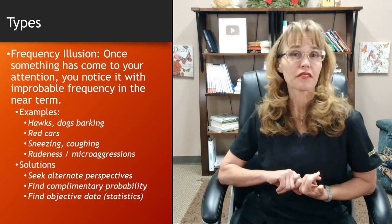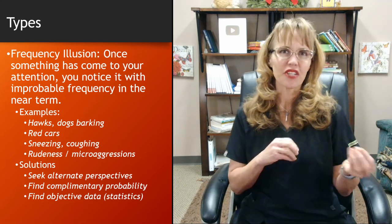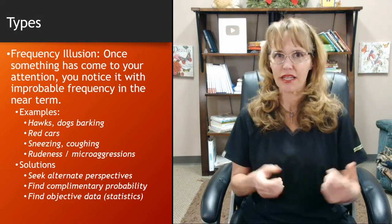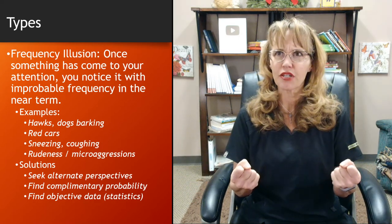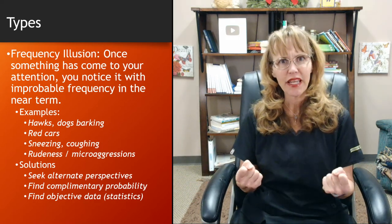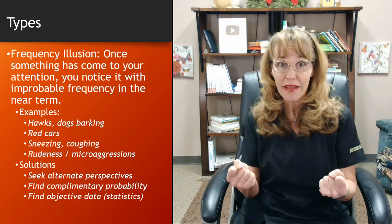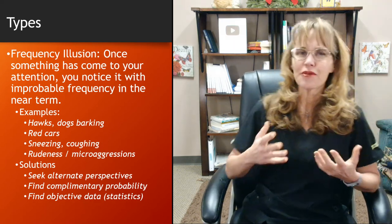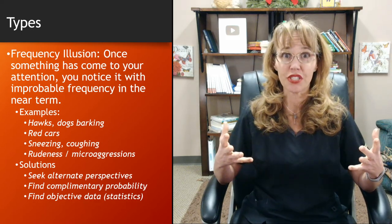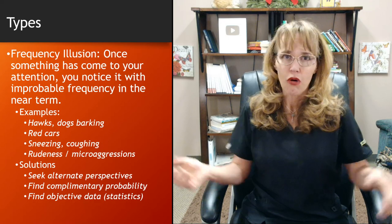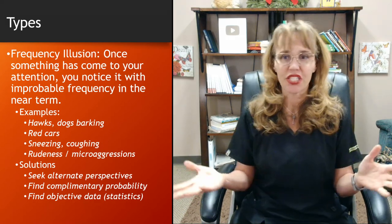Red cars — or any color car — are another example. If you notice a particular color car, maybe you just got a new car and it's red, and all of a sudden you're driving around surprised by how many other red cars are on the road. That's a frequency illusion: because you're driving a red car you're paying more attention to red cars, or because you're driving an SUV you're paying more attention to SUVs.